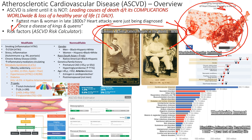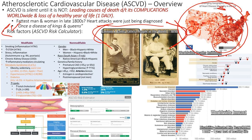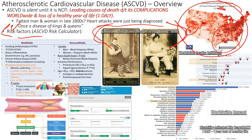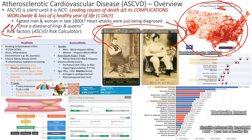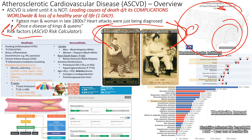Now we can Uber Eats food just like royalty once could. Risk factors for ASCVD can be assessed with an ASCVD risk calculator — there's a QR code on the slide. If you know your lipid panel, you can get a pretty accurate risk estimate for developing ASCVD complications and mortality.